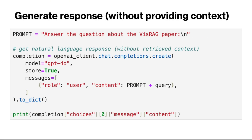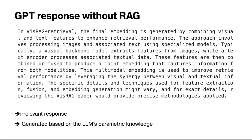Now we can generate a response using the OpenAI GPT-4o model. Our prompt contains this message: answer the question about the VisRAG paper, followed by the query. For testing purposes, first let's not include the retrieved chunks and see what response the GPT model gives us. When we call the OpenAI client chat completion API with this message, we get this response.